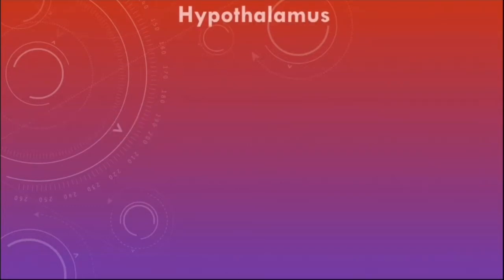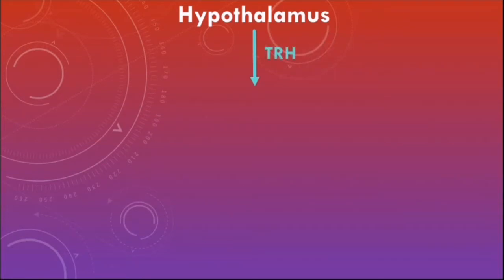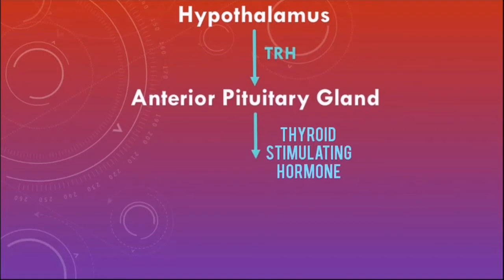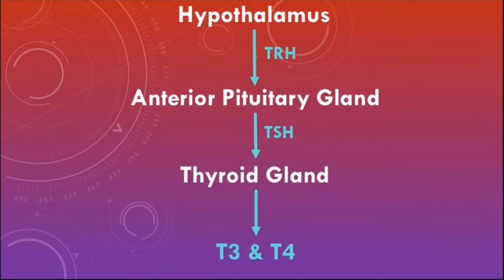In the hypothalamus, there's a nucleus called the paraventricular nucleus, and this nucleus produces a hormone called thyrotropin-releasing hormone, or TRH. TRH can stimulate the anterior pituitary gland to produce thyroid stimulating hormone, or TSH. TSH has receptors on the thyroid gland and can stimulate it to produce thyroid hormones such as T3 and T4.